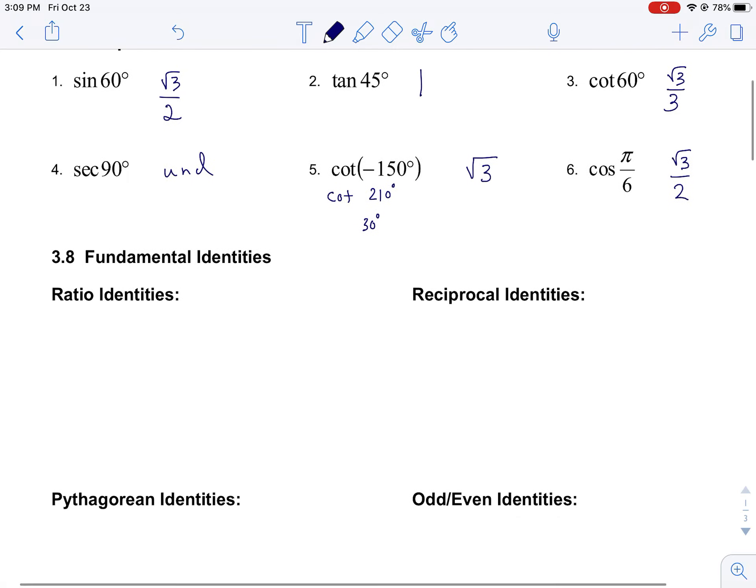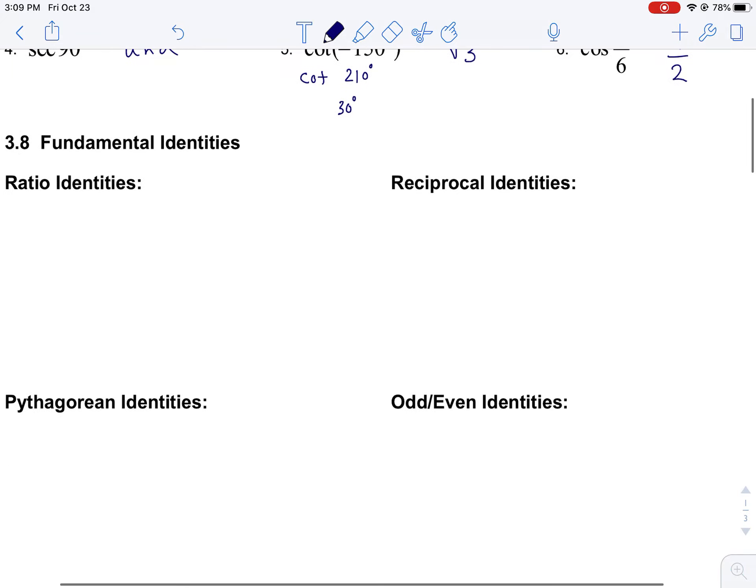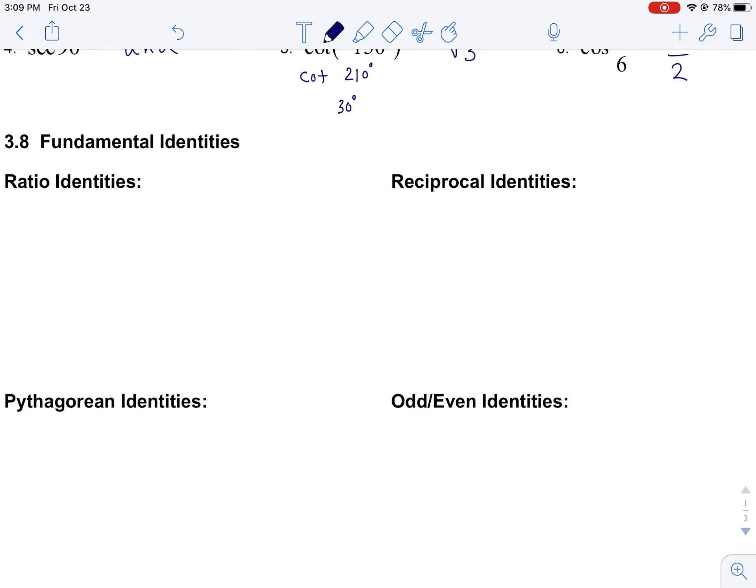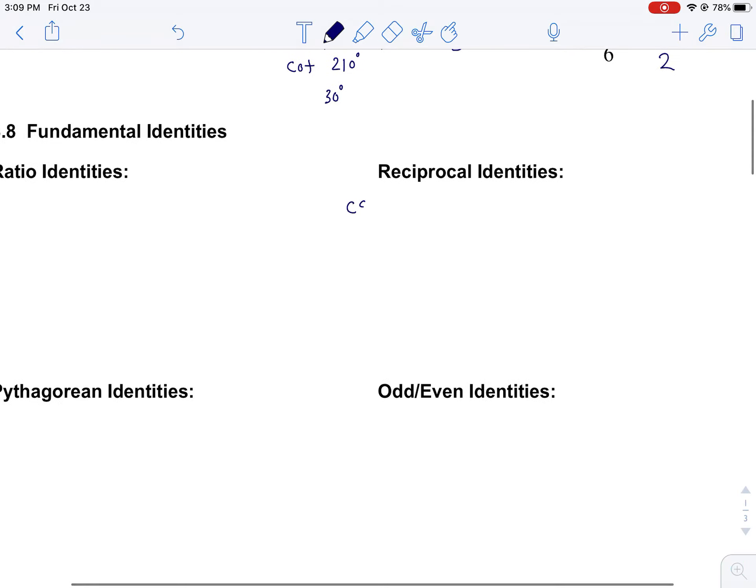All right, so we have these identities and a lot of these you've kind of heard of before. I'm going to go out of order and look at the reciprocal identities. Basically, these identities just state the relationship among the functions.